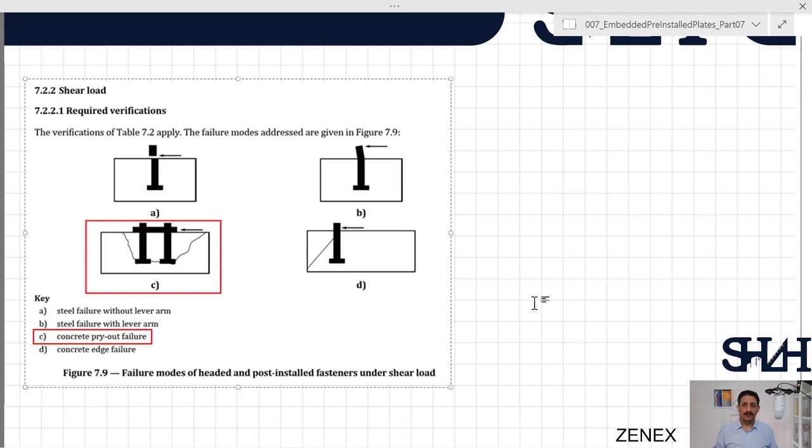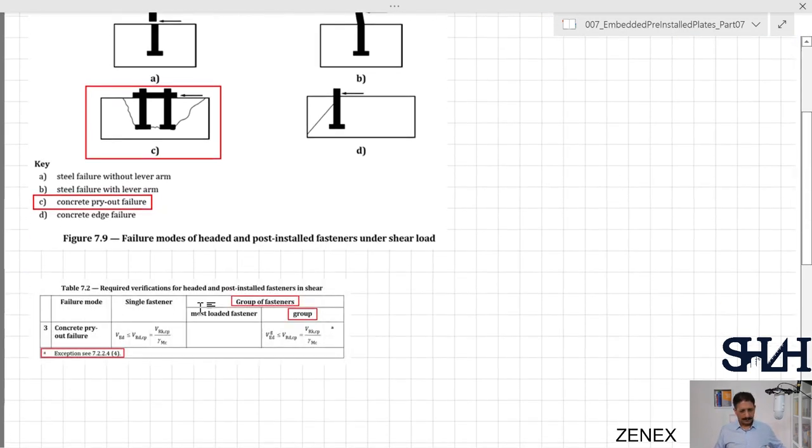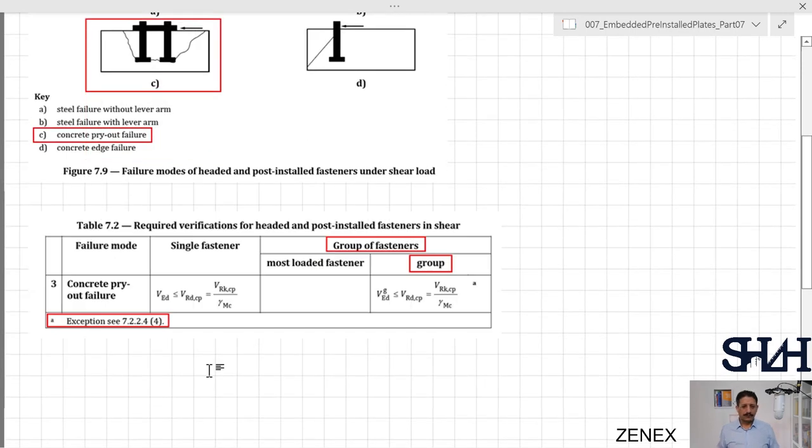Part D we already checked in the previous video for the concrete edge failure, and now we are going to check for concrete pry-out failure. Then we need to go through table 7.2, so concrete pry-out failure V_Ed needs to be less than V_Rd,cp which in our case is a group of fasteners.